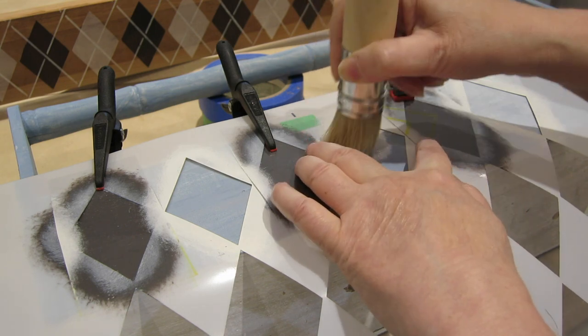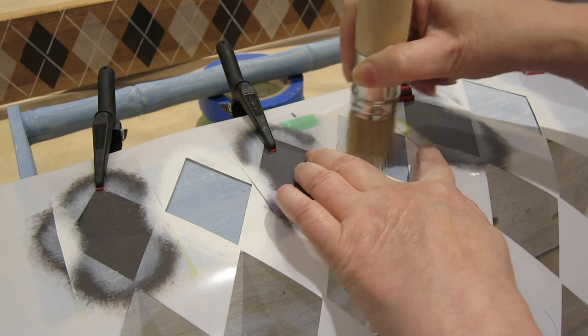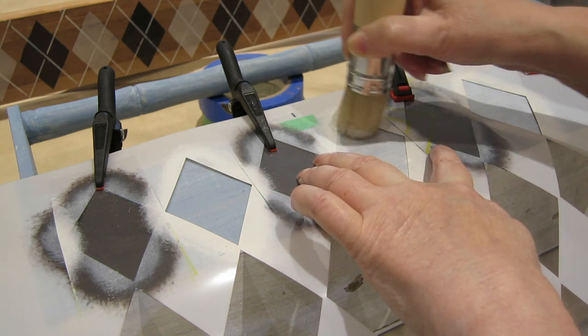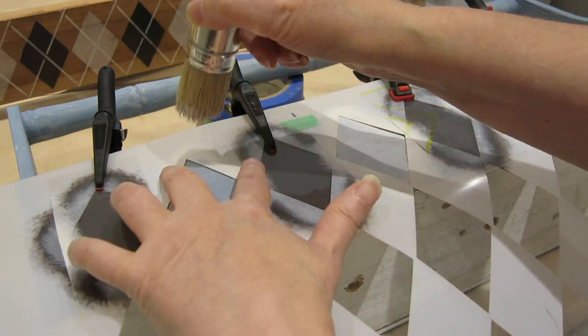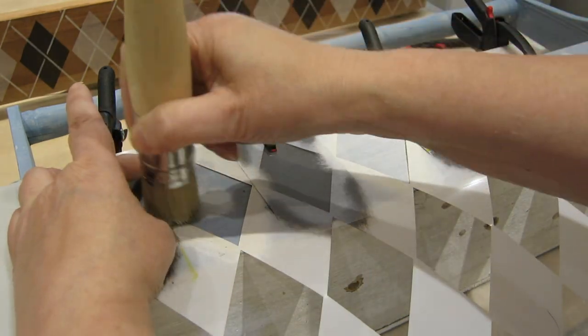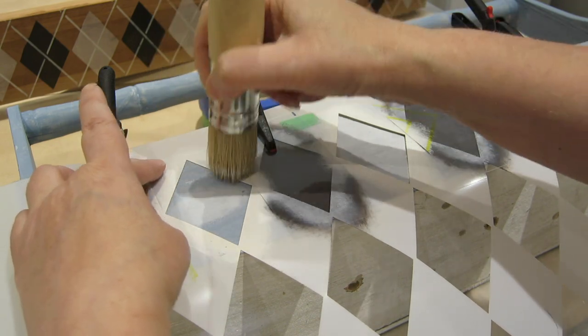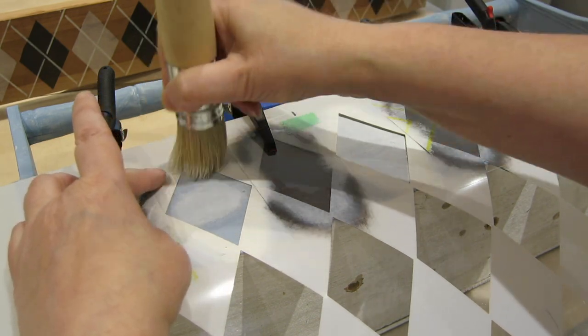That really helps prevent the paint bleed underneath your stencil. We've also got an entire video on how to prevent paint bleed, which we'll link to in the upper right corner. Again, starting in the middle so that you offload most of the paint there and then move towards the edges.